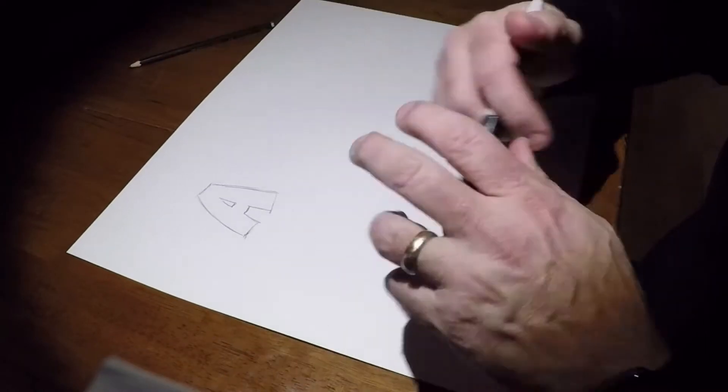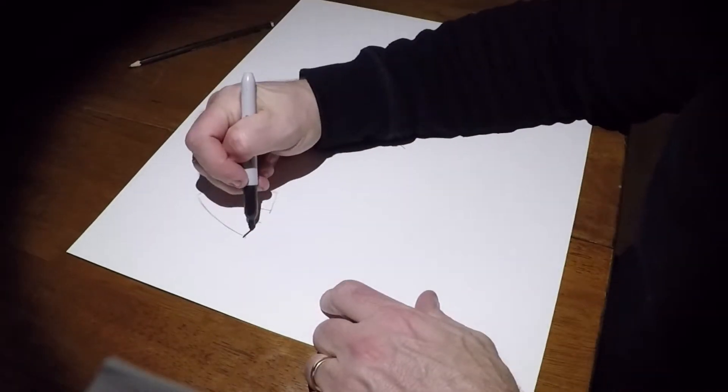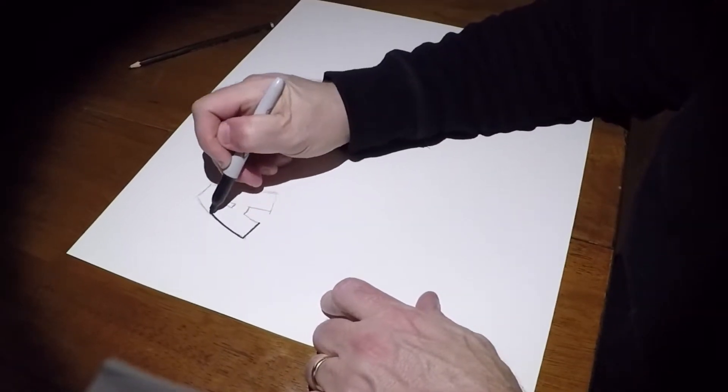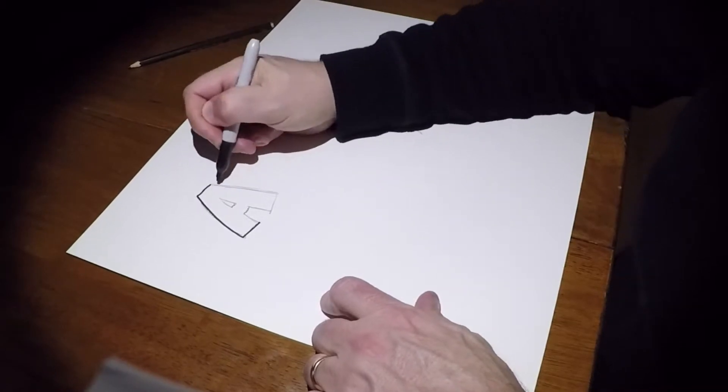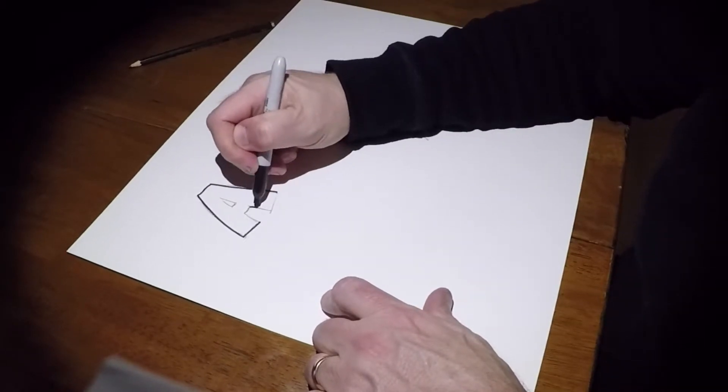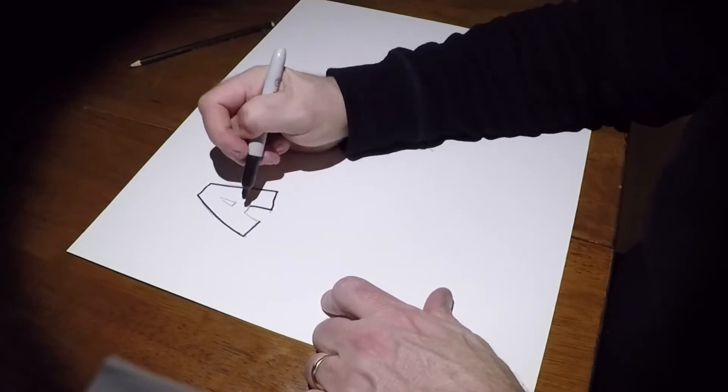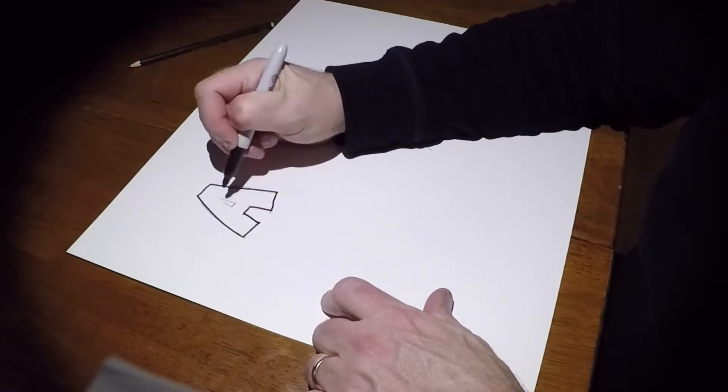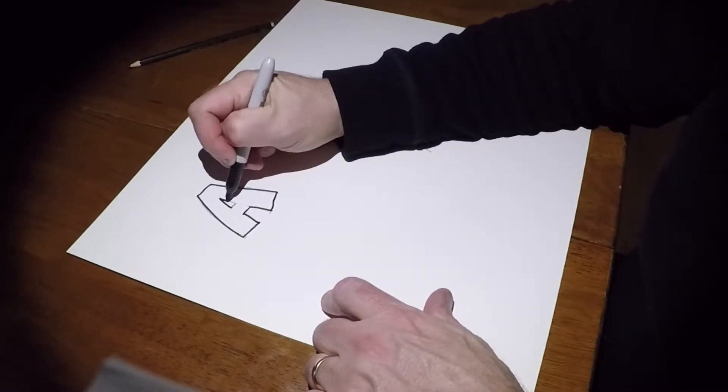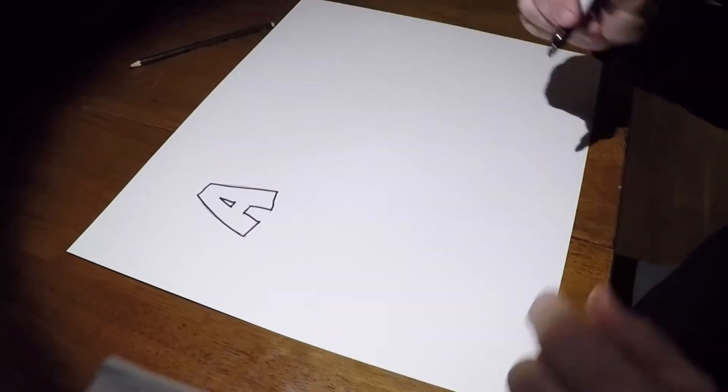And I'll go ahead and do it in marker because it's going to show up a lot more. Let's say this is our A and we want to have the A stretched out here. This is just a simple way and it doesn't matter if you have some of these lines crossing because you'll see why in a second. So there's a big bold A.